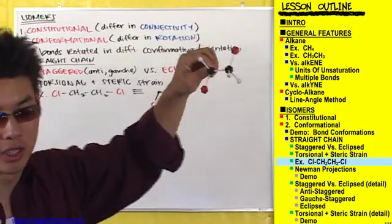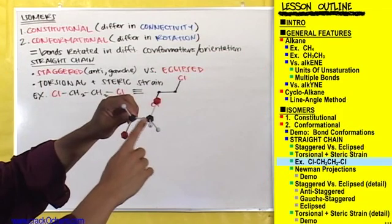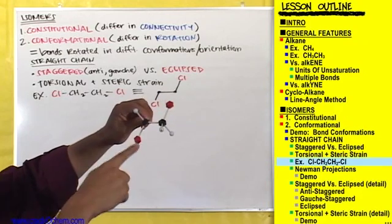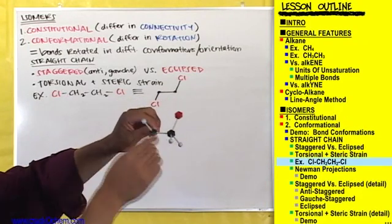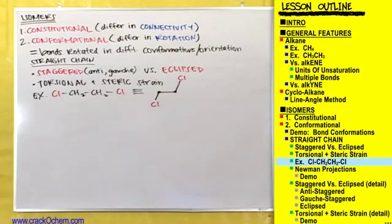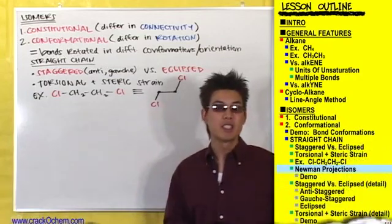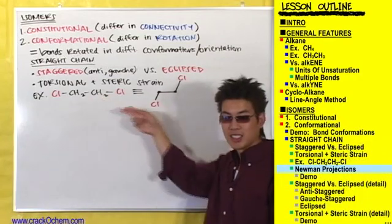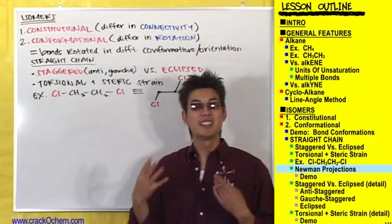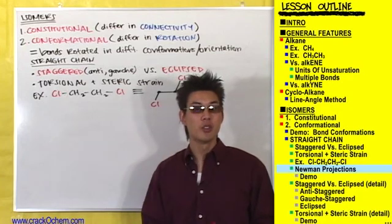Let me zoom in so you can get a closer look. Here are the two carbons in the middle, the two chlorines sticking off of those carbons, and here are the hydrogens on each carbon that are implied in the line-angle method. So right now we've got three ways of visualizing this compound: the traditional way, the line-angle way, and the model. But if that already wasn't enough, I've got a fourth way — it's called a Newman projection.